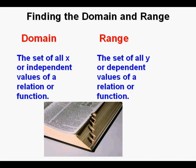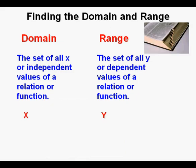Since domain and range are not exactly everyday conversational words, what do I do to keep them straight? I like to think of a couple other sets of word pairs that are associated. Using the dictionary: x comes before y, just like domain comes before range. Input comes before output, so we associate input with domain and output with range.